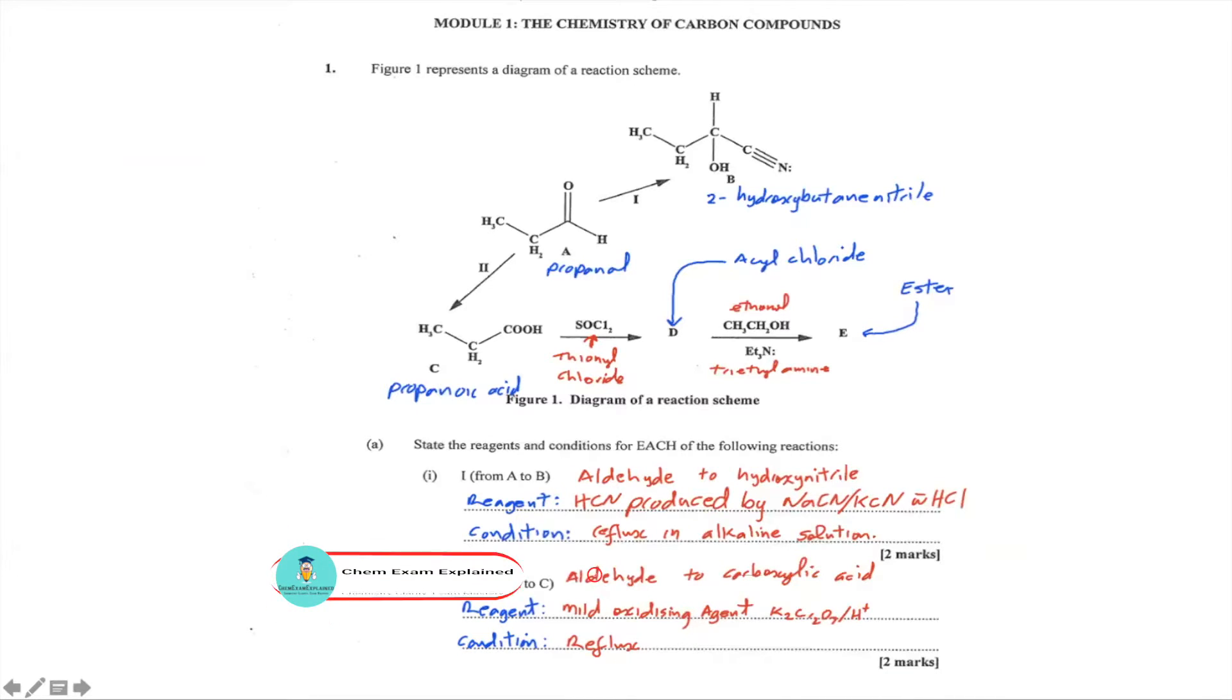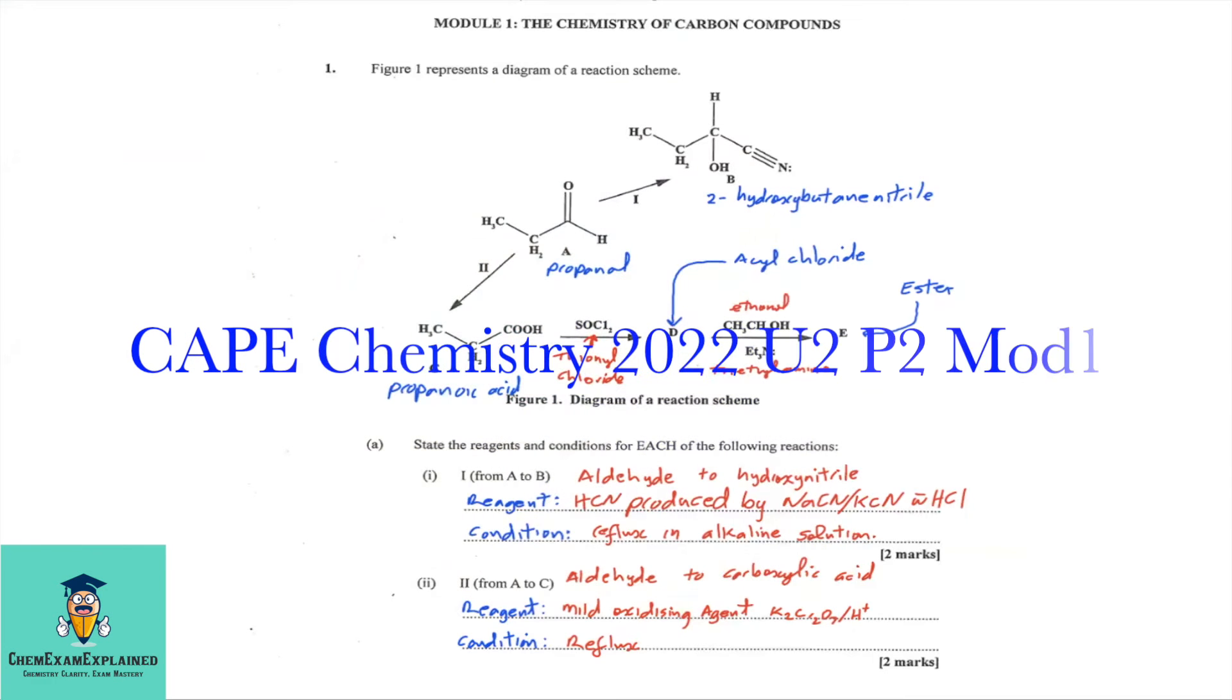Welcome to ChemExamExplained, where the aim is chemistry clarity, exam mastery. In this video, we will be looking at K-Chemistry 2022, Unit 2, Paper 2, Module 1. Let's begin.